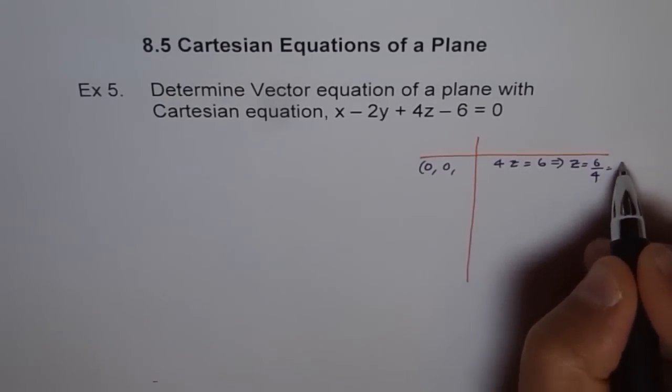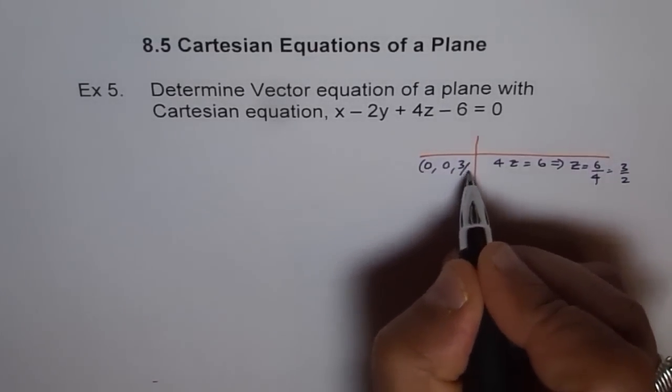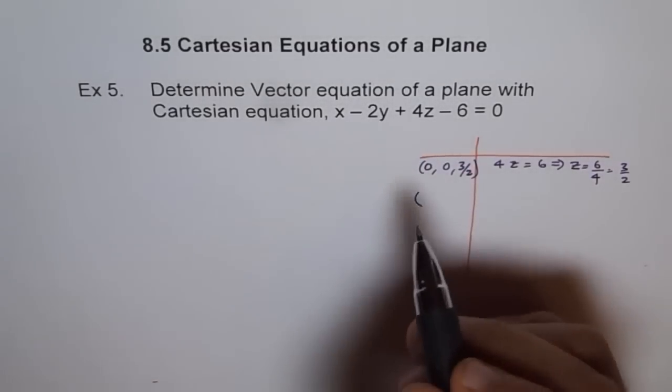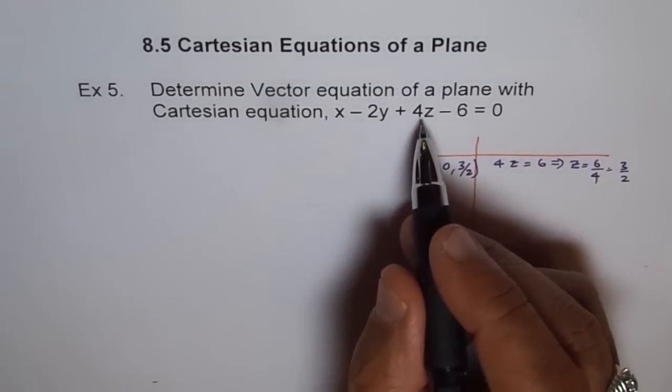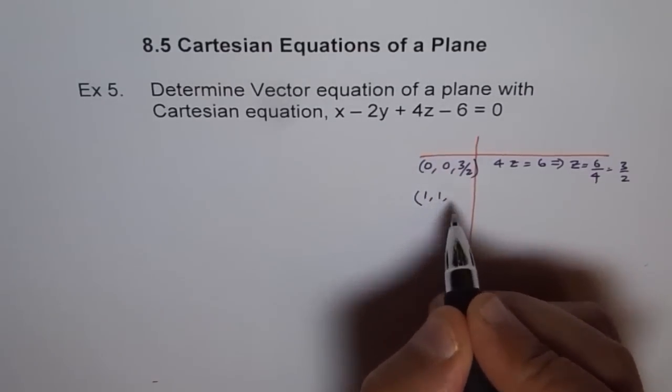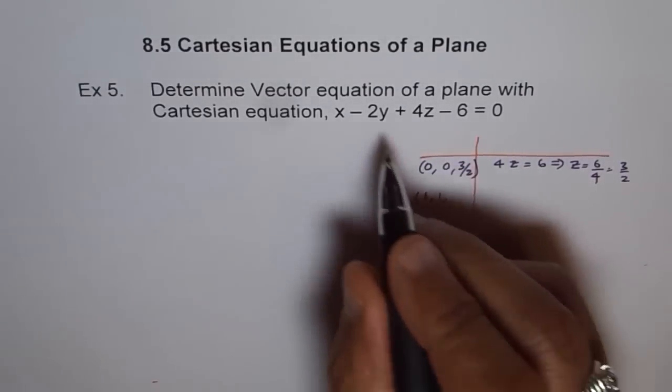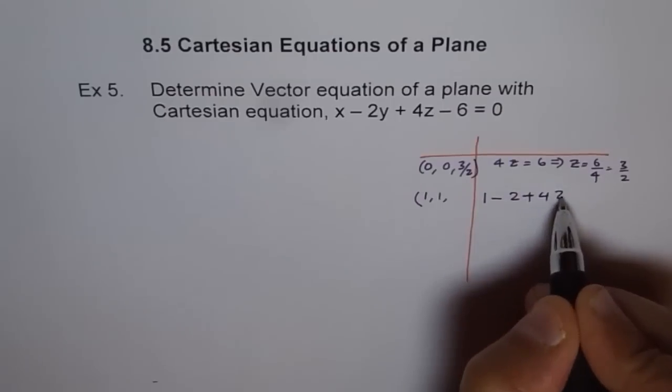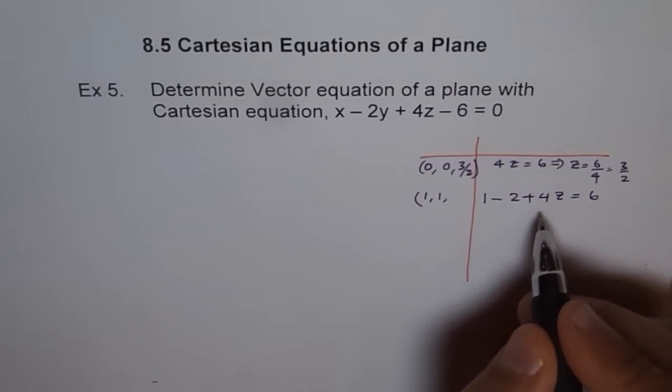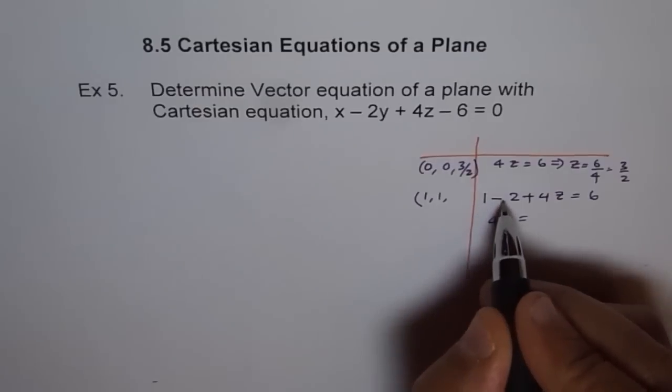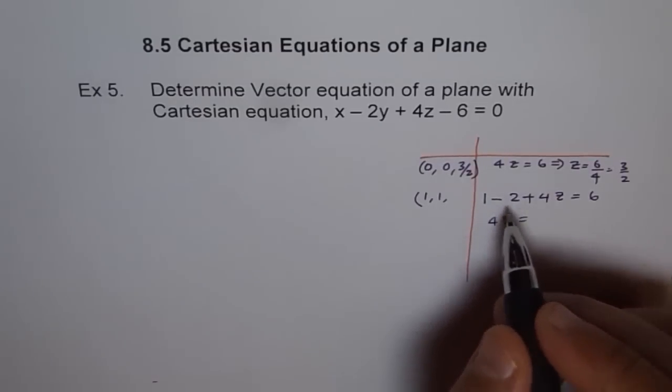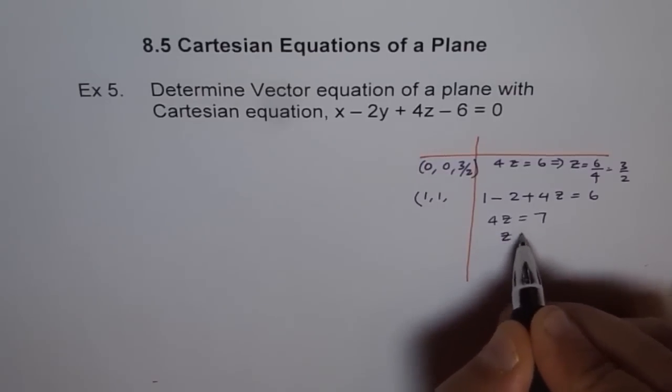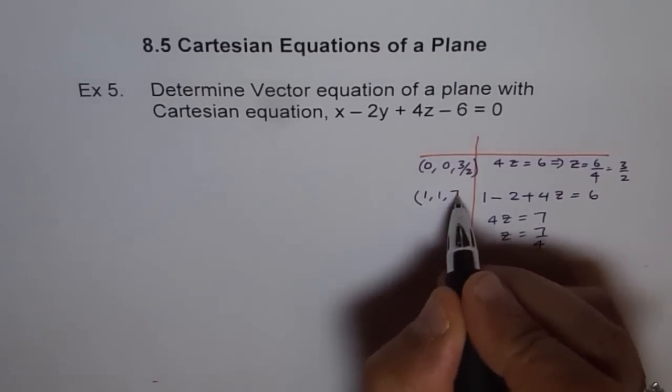It is just 3 over 2. So we get 3 over 2. Now, let us say we have x as 1 and y as 1 and let us find what z is. If we write 1 and 1 here, then we get 1 minus 2 plus 4z equals 6, and then we say 4z equals 7, and z equals 7 over 4.